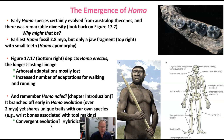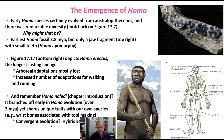Remember from the chapter introduction, it talked about Homo naledi. It branched off very early in Homo evolution — over 2 million years ago — and yet it still shares some unique traits with our own species. That is indicative of how Homo was different from australopithecines.